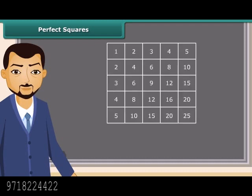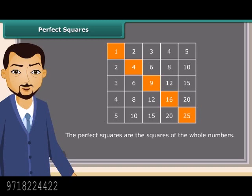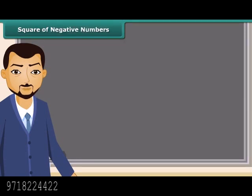Do you know what we call these numbers? They are called perfect squares. The perfect squares are the squares of the whole numbers. Can we think of the square of a negative number? Yes, why not?